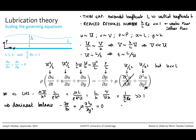The dominant balance in the x-momentum equation involves only the right-hand side terms: minus dP/dx plus mu d²u/dy² equals 0. This also gives us a scaling for capital P, which scales like mu U L over H squared.